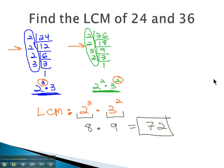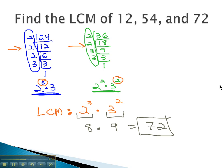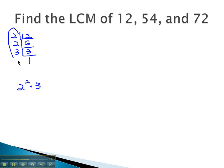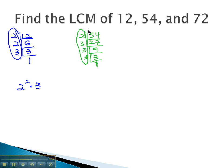The nice part about the prime factorization method is it works just as well when we have 3 numbers. Finding the prime factorization of 12: it's divisible by 2, giving 6, divisible by 2, giving 3, divisible by 3 once — so it is 2 squared times 3. Finding the prime factorization of 54: it's divisible by 2, giving 27, which is divisible by 3, giving 9, divisible by 3, giving 3, and divisible by 3 once. The prime factorization of 54 is 2 times 3 cubed.